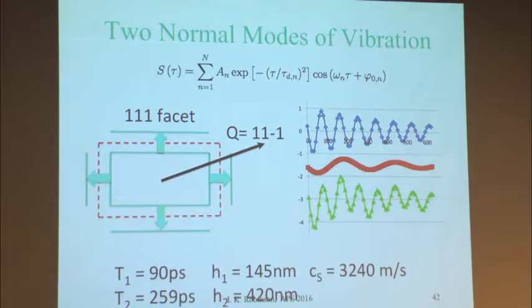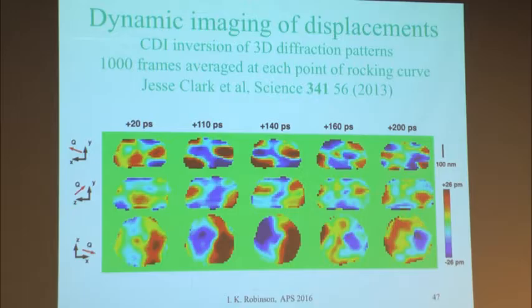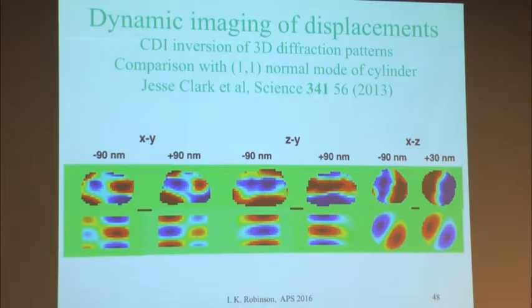Beyond the breathing modes, we can watch the internal strain pattern change with time delay. We see maxima and minima of outward and inward compression projected onto the 111 Bragg direction—an internal vibration mode. Modeling this, we get agreement with a shear mode called a 1-1 mode of a cylinder, and the pattern in our experiment agrees well with this simple model. I'll skip some details and move on to new territory.